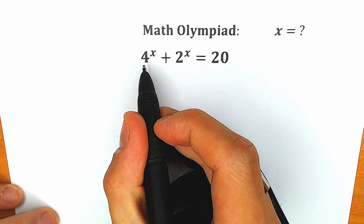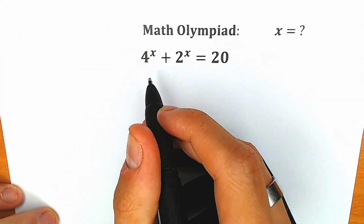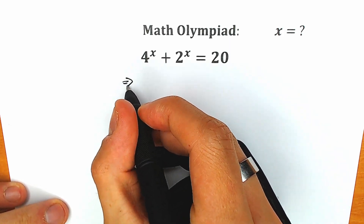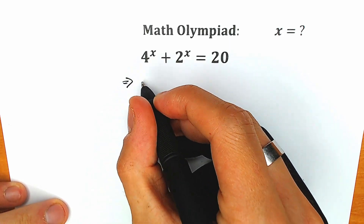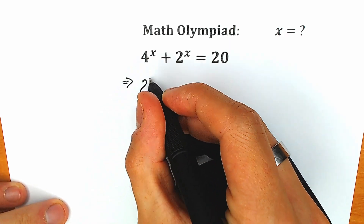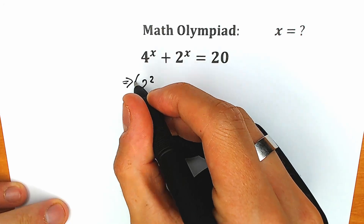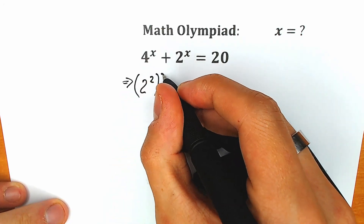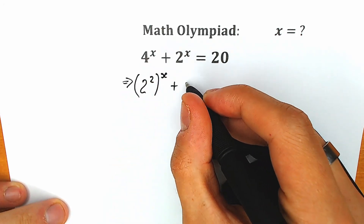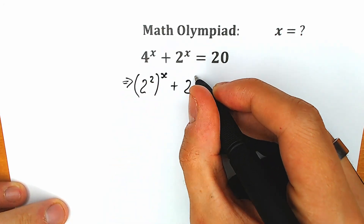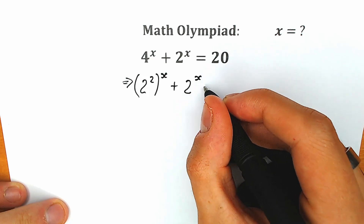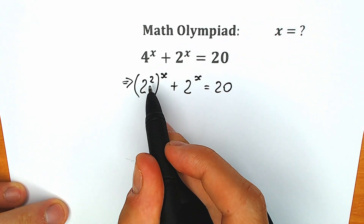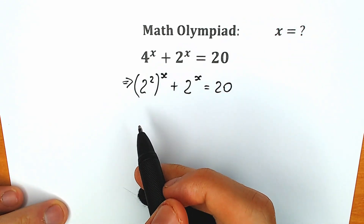First of all, this 4 can be written as 2 squared. So this 4 we can write as 2 squared — but don't forget about this x, because we have x as this power: 2 squared to the power x, plus 2 to the power x, equal to 20. Right now we have 2 to the power 2, to the power x.